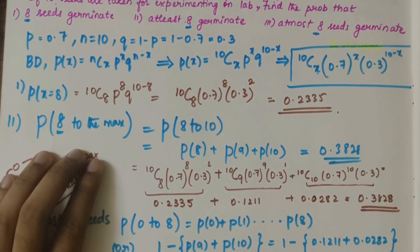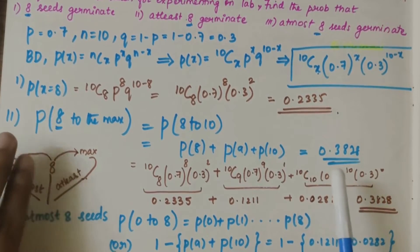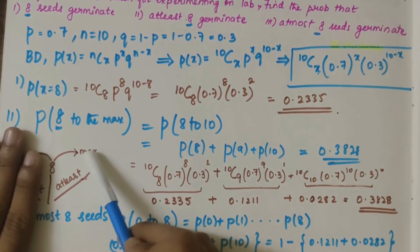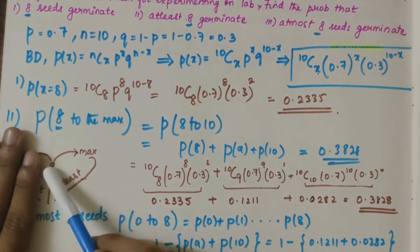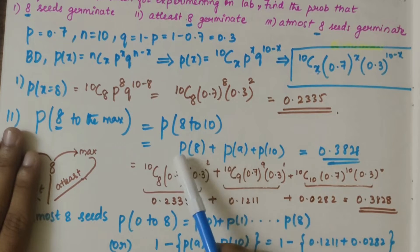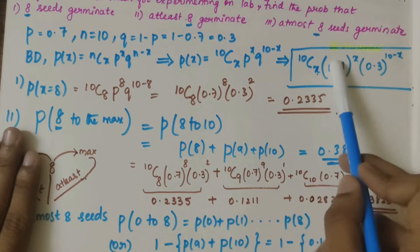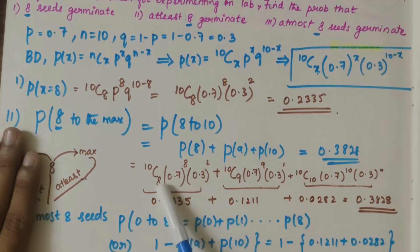Our second part was at least 8 seeds germinate. At least 8 seeds means 8 to maximum, that is 10 seeds. So p(8 to 10), that is p(8), p(9), and p(10). In this equation, substituting the x values as 8, 9, and 10, and then solving it further in calc, you'll get the below answers.